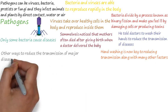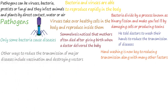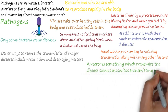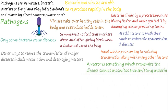Hand washing is now key to reducing transmission, along with many other factors such as using antiseptics — all of this relates to having good hygiene. Other ways to reduce the transmission of major diseases such as malaria include vaccination and destroying vectors. A vector is something which transmits the disease, such as mosquitoes transmitting malaria.